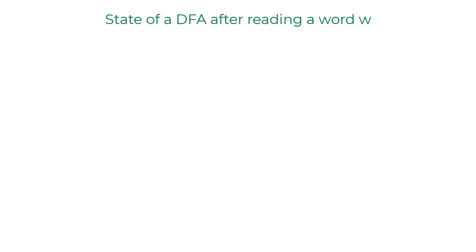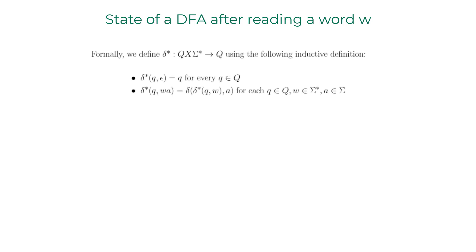For that, let me formally introduce delta star. Delta star is an upgrade of the standard transition function delta of a DFA. Delta star takes two input arguments — a state and a word — and delta star of a state and a word gives you the state the DFA will be in after reading that entire word.